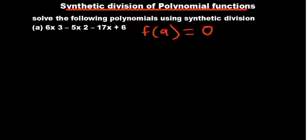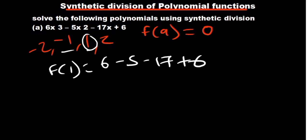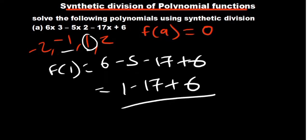We're supposed to look at negative 1, positive 1, 2, and negative 2, but we give priority to negative 1 and 1. I'll start with 1. When you say a function of 1, at every point where we have x we put a 1. So it will be 6 minus 5 minus 17 plus 6 — 1 doesn't change anything about the function. So 6 minus 5 is 1, minus 17 plus 6: this is not equal to 0.